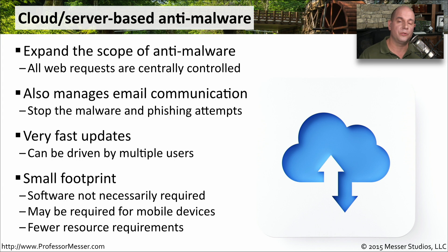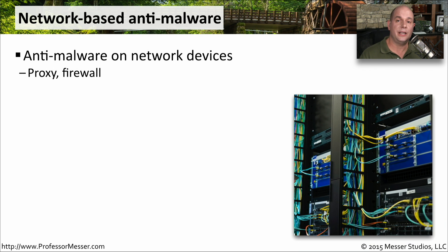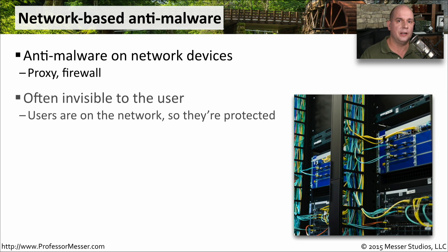There are also fewer resource requirements on the inside of your network, since all the hard work is being done by the anti-malware in the cloud. You can also run anti-malware inside your network on your infrastructure devices. It's not uncommon to have anti-malware running on firewalls or proxies, and all of the network communication going through those devices is examined for any type of malware. These are generally completely invisible to your users because they're simply part of your normal network infrastructure, and because they are so seamless, they can block malware and allow good traffic without users even knowing.